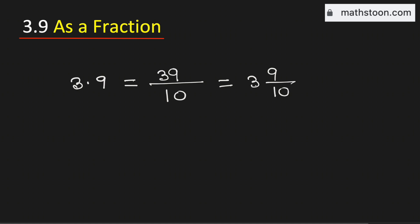Therefore, 3.9 as a mixed number is equal to 3 and 9 tenths, and this is our final answer.